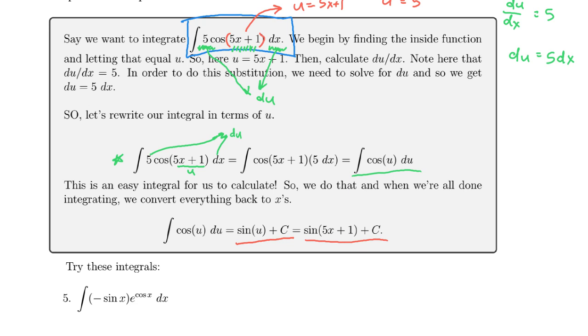And so this, in fact, maybe I'll box it in blue. This is the antiderivative of what we originally had up here. Now, we can always check that by computing a derivative off to the side. So our derivative will be the derivative of our answer, sine of 5x plus 1.